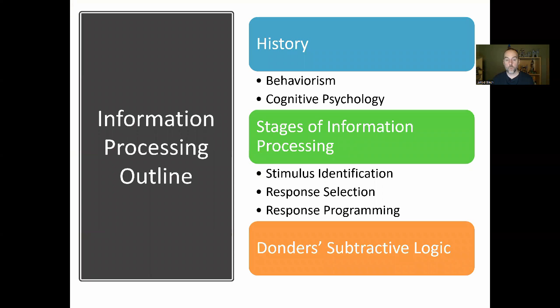We're going to spend a little bit of time talking about the history — how we've arrived at a cognitive psychology perspective. Then we're going to talk about the stages of information processing, the things that occur in our mind during a reaction time interval. Then we're going to apply this with Donders' subtractive logic, which is quite an old experiment but still applies today and is a great demonstration of information processing.